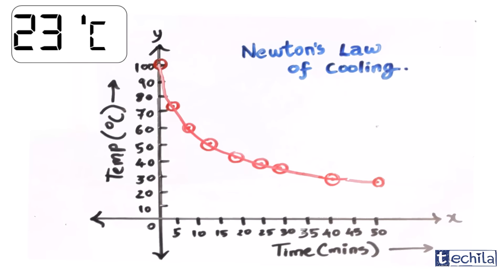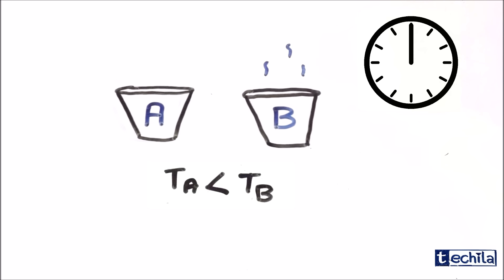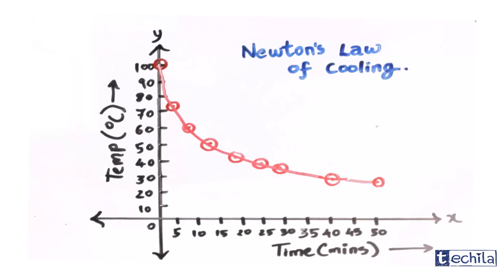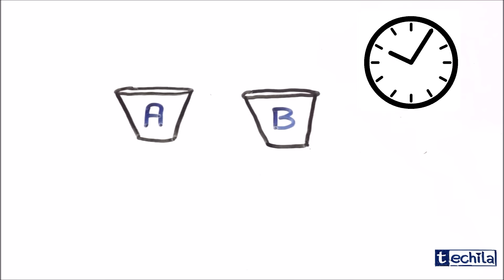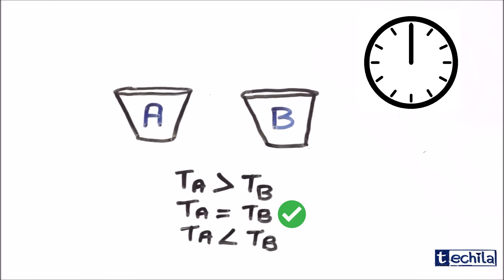Hence, we can say that initially, the temperature of water in bucket B is greater than the temperature of water in bucket A, but decreases exponentially. So, after sufficient amount of time, T A will be equal to T B.